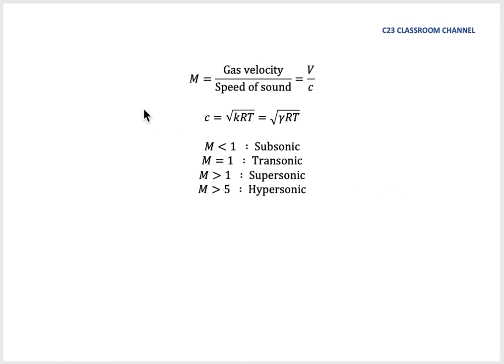So what is Mach number? Mach number is symbolized by M and the definition is the gas velocity or the velocity of object ratio to the speed of sound. It can be written like this.